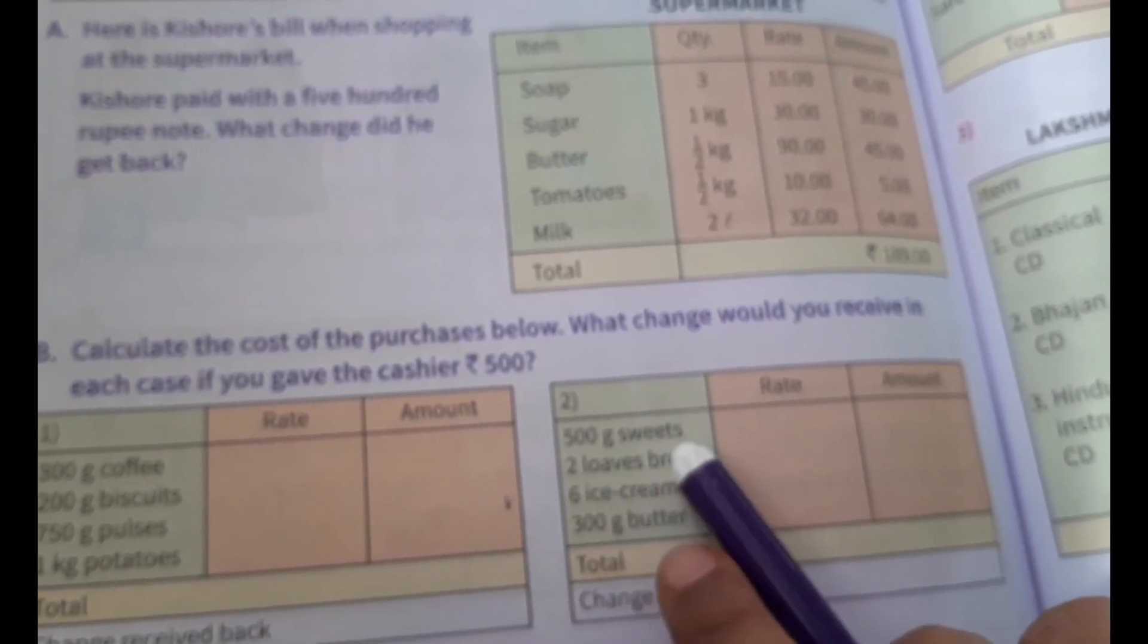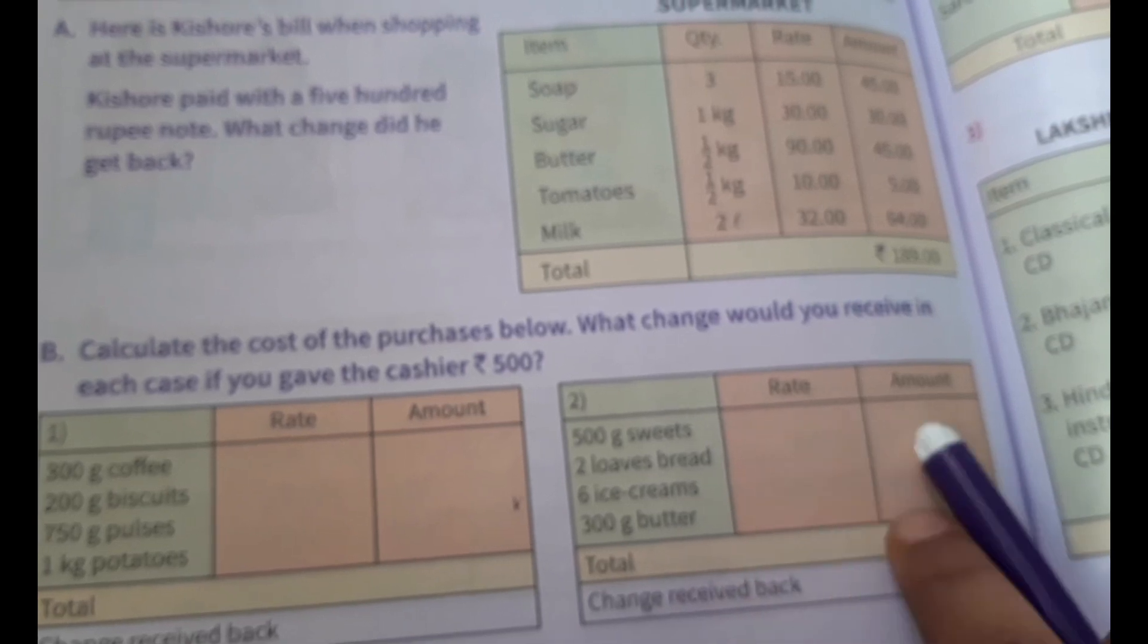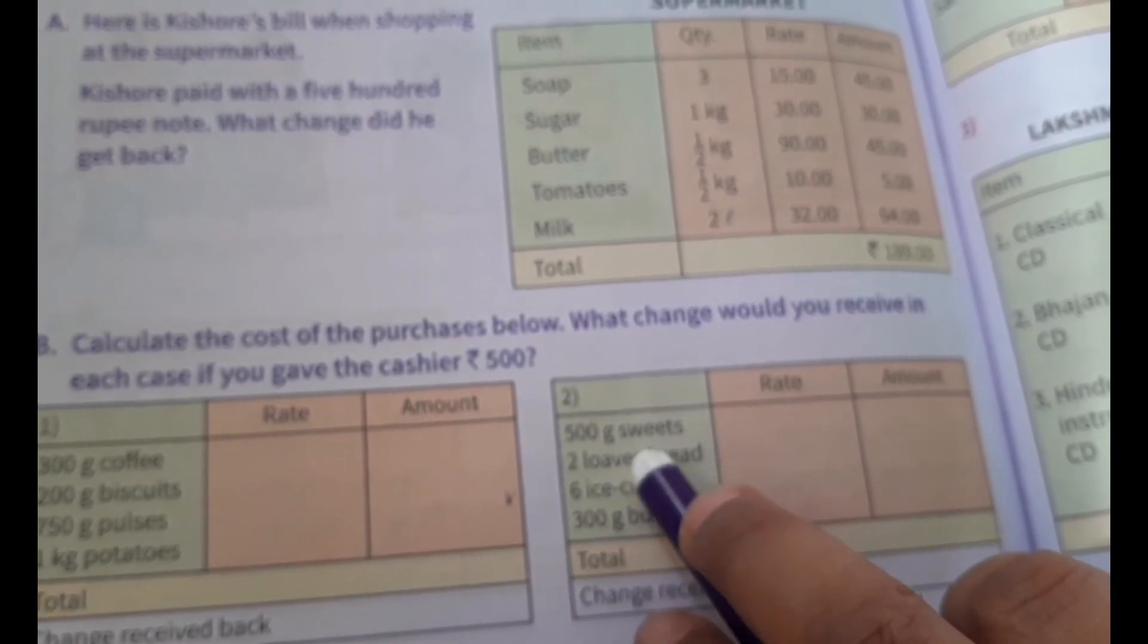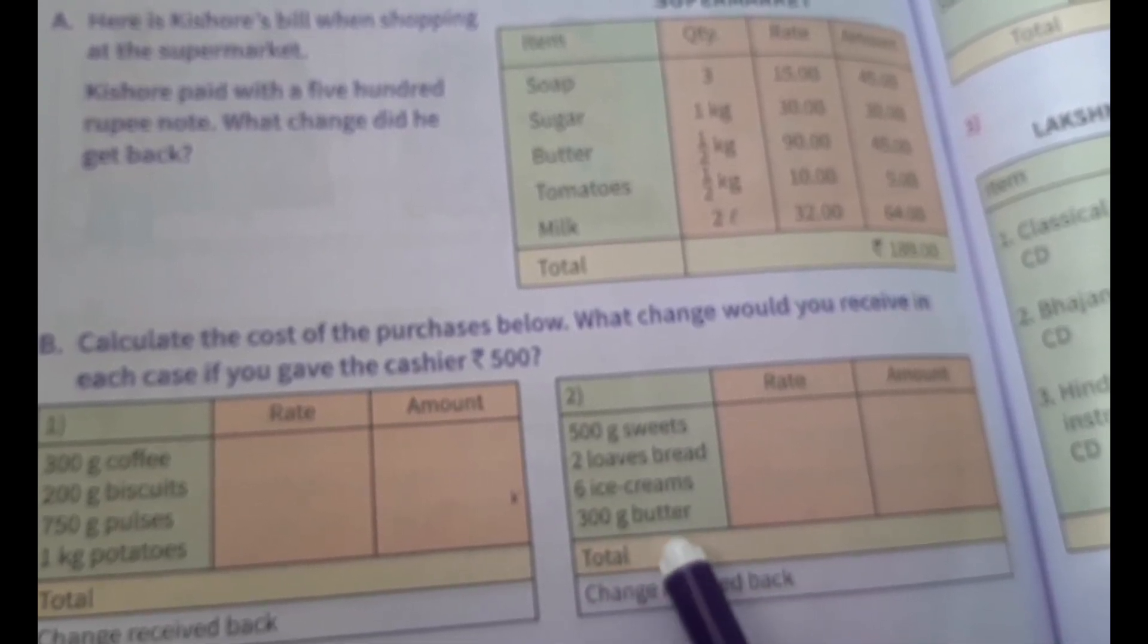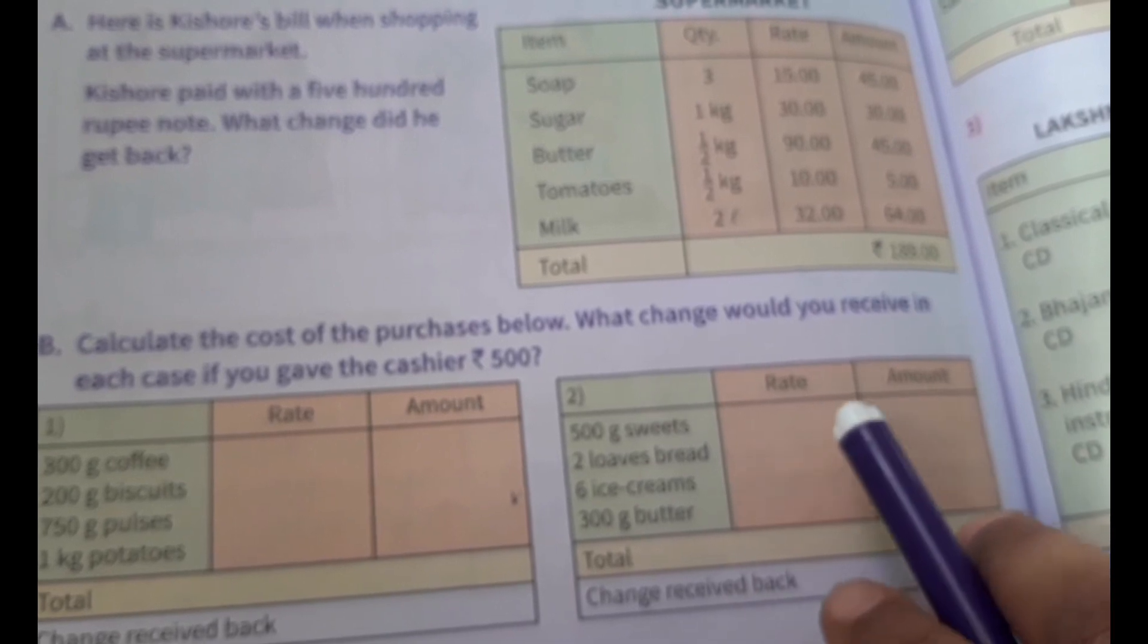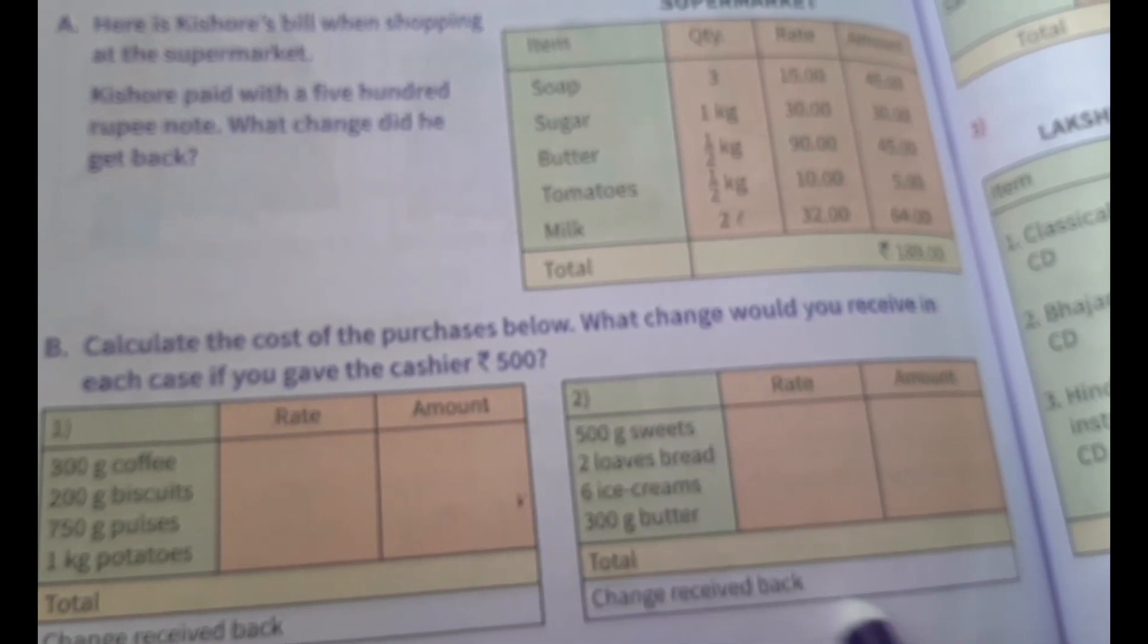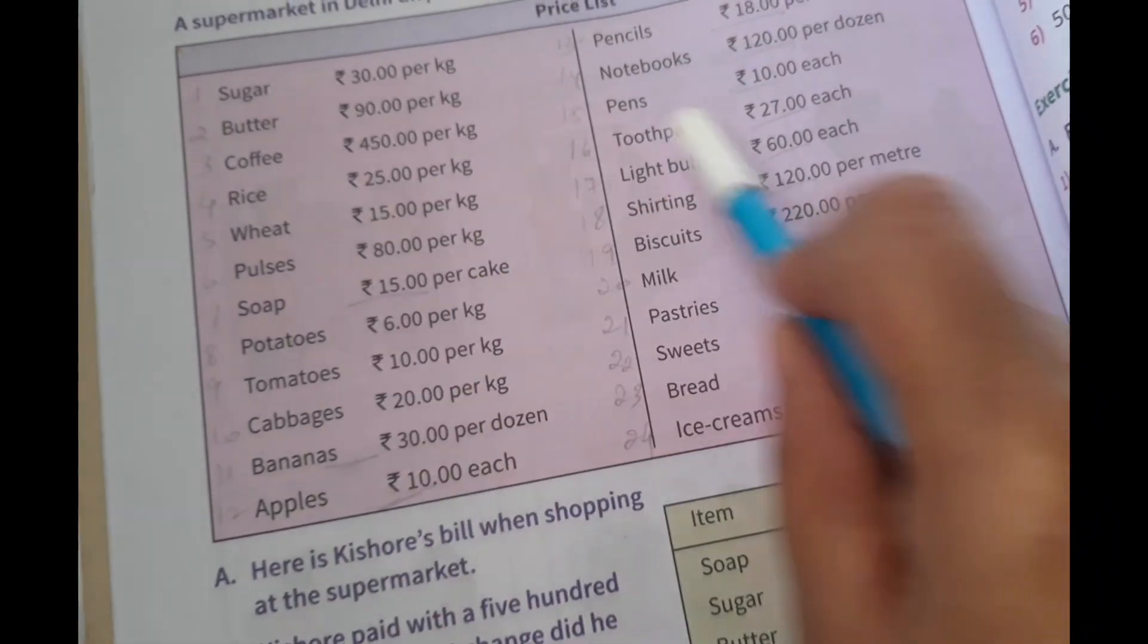In this first question is over, now we have to find the second one. The items are given: 500 gram sweets, two loaves of bread, 6 ice creams, 300 gram butter. We have to write the rate and amount, calculate the total, then the change received back. I separately written this chart in a paper.